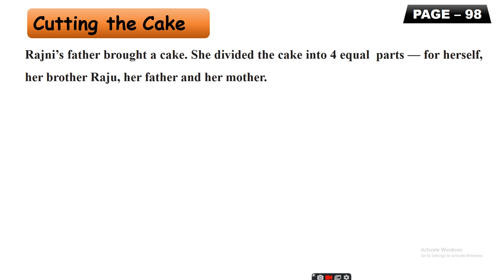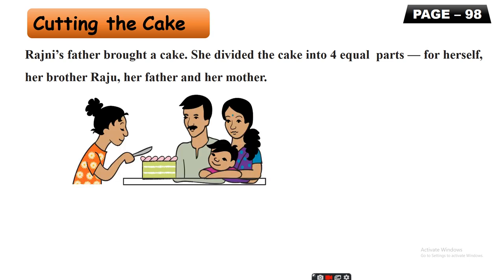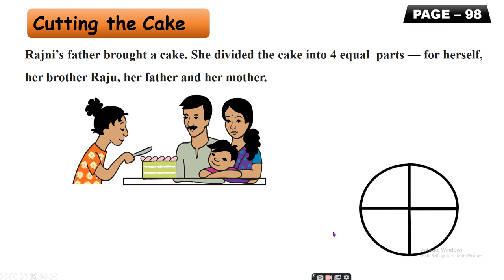Rajni's father brought a cake. Rajni divided the cake into four equal parts — for herself, for her brother Raju, for her father, and for her mother. You can see here: this is the cake with portions for Rajni, father, mother, and Raju.